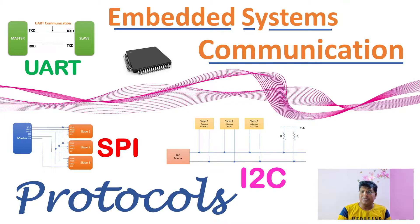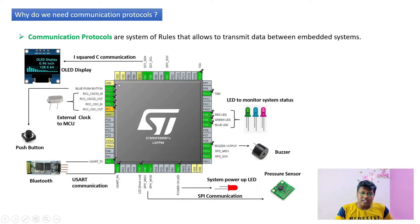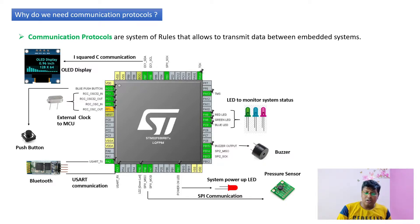First, let's understand why we need such communication protocols. Communication protocols are a set of rules that allow data transmission between embedded devices. For example, consider this project where we are sending data received from a pressure sensor to a display, and in parallel sending the data via Bluetooth to a mobile phone. To achieve this, we use UART communication to talk between the Bluetooth module and the main microcontroller unit.